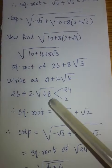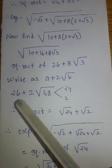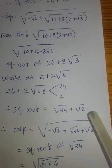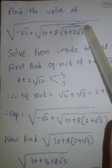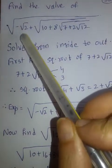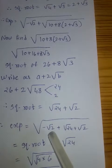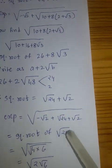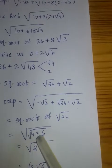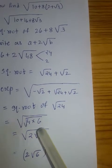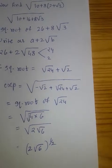So the expression is 26 + 2√48. Since 24 × 2 = 48 and 24 + 2 = 26, square root is √24 + √2. So the original expression now has −√2 + √24 + √2. The √2 terms cancel, leaving √(√24). Since 4 × 6 = 24, 2 comes out. So the answer is square root of 2√6, or (2√6) raised to the power of half.